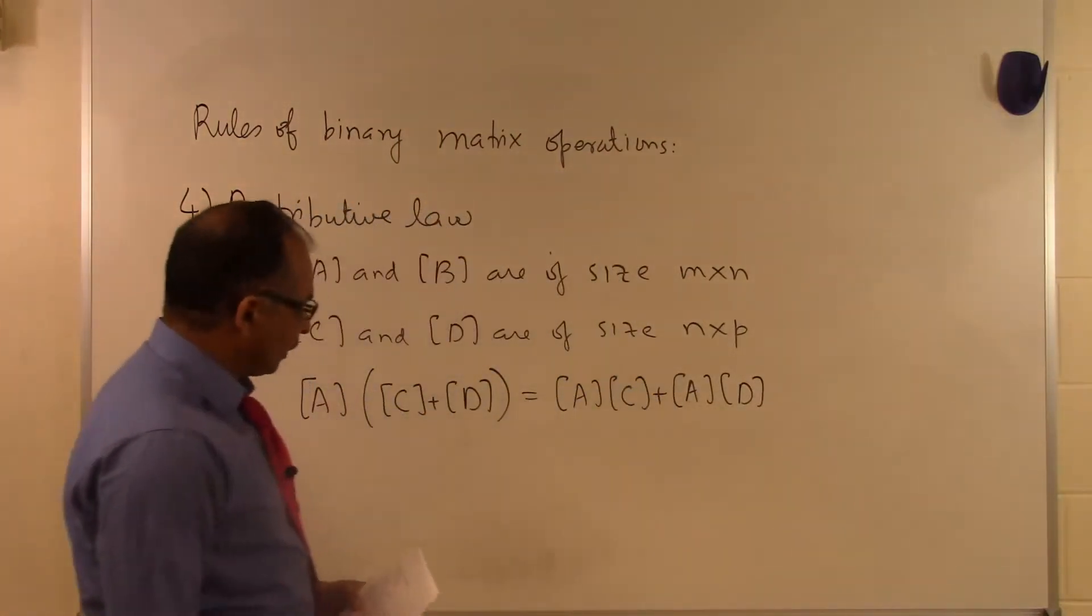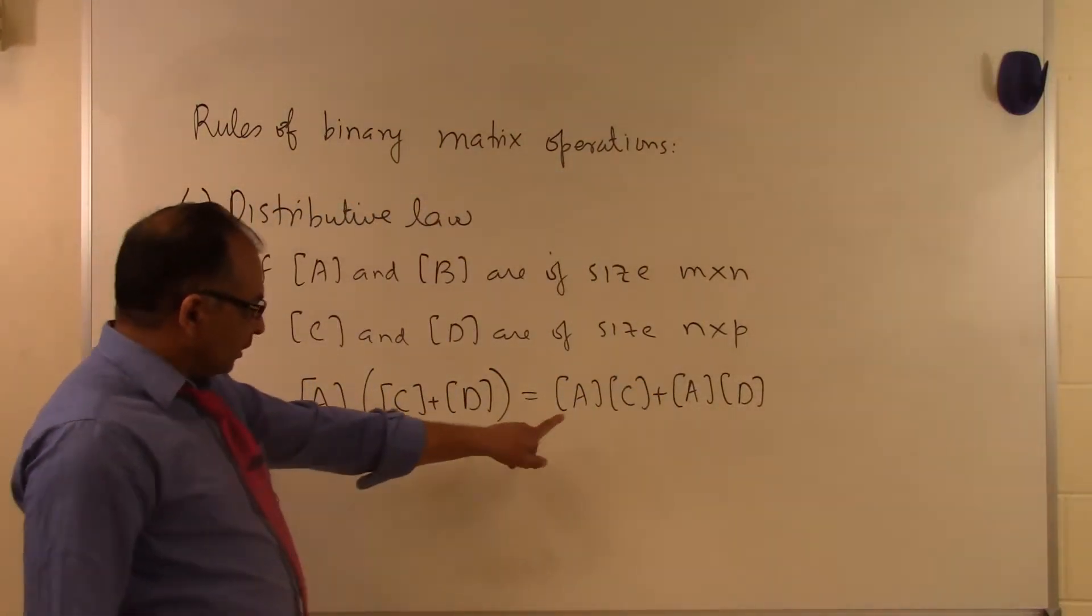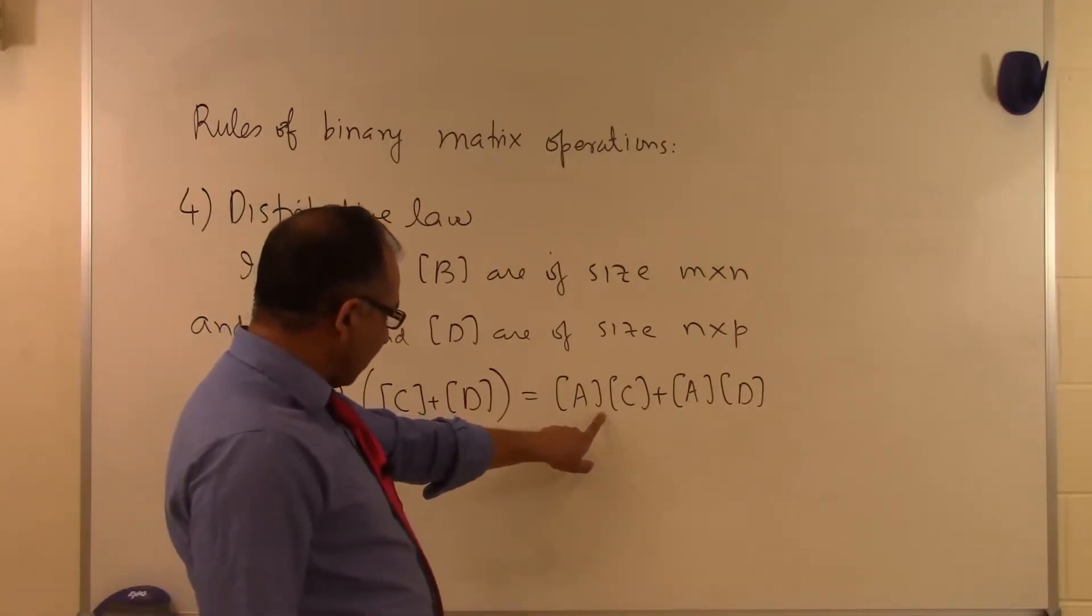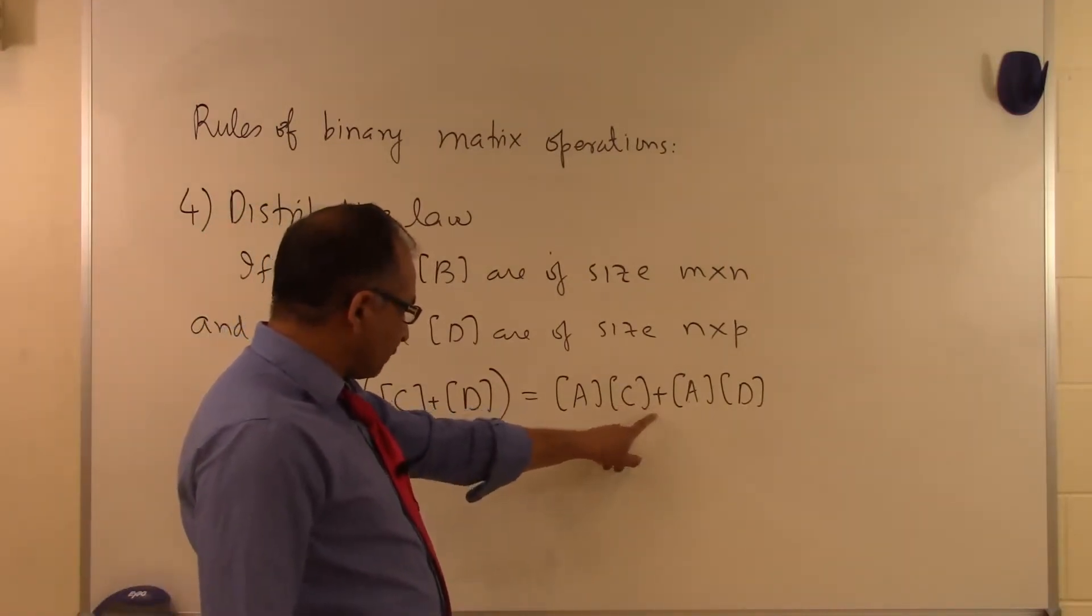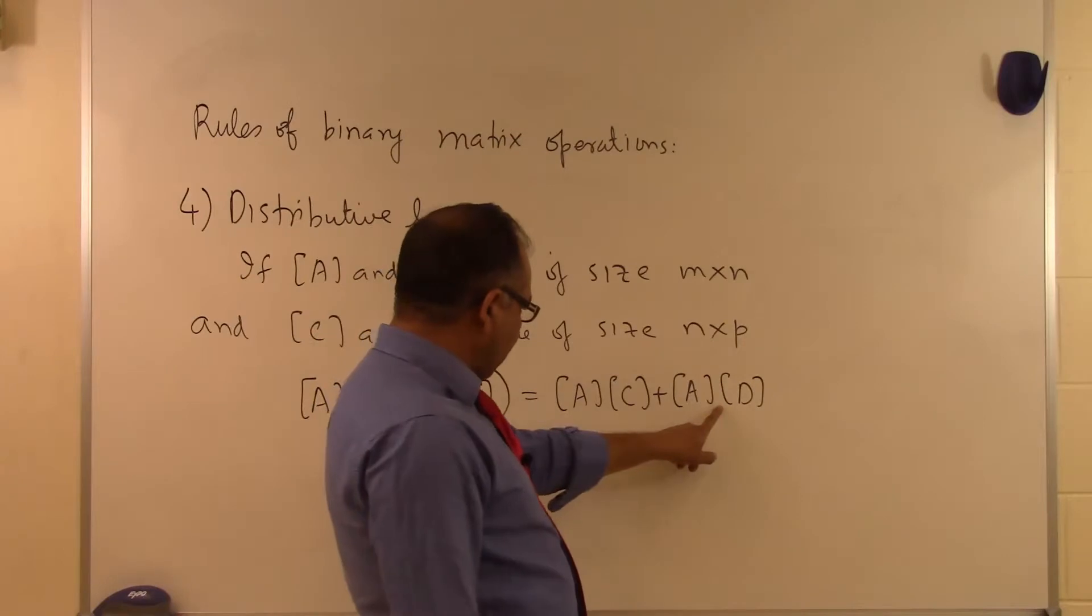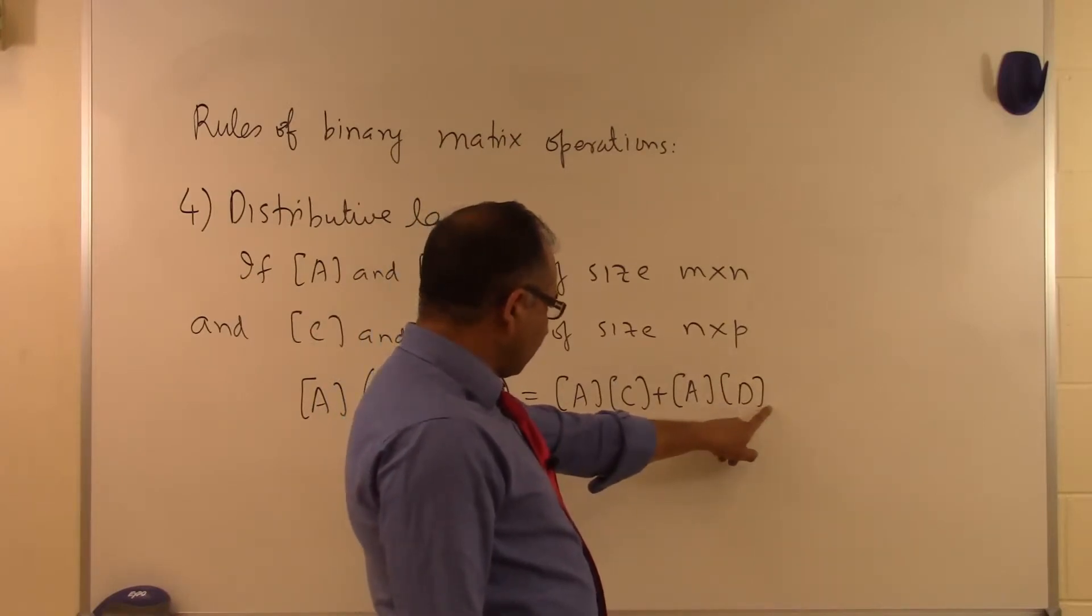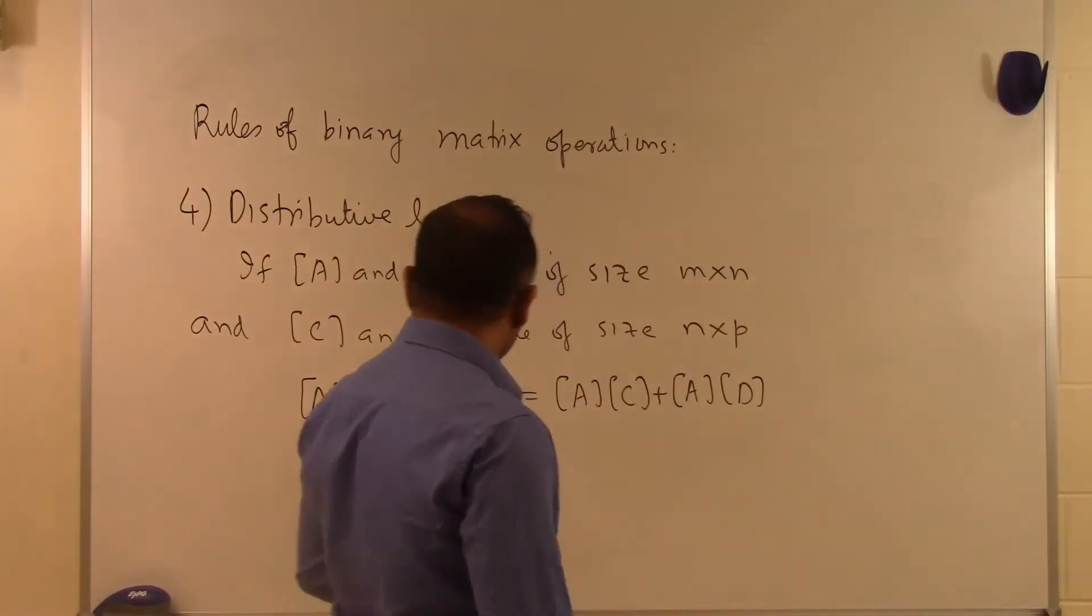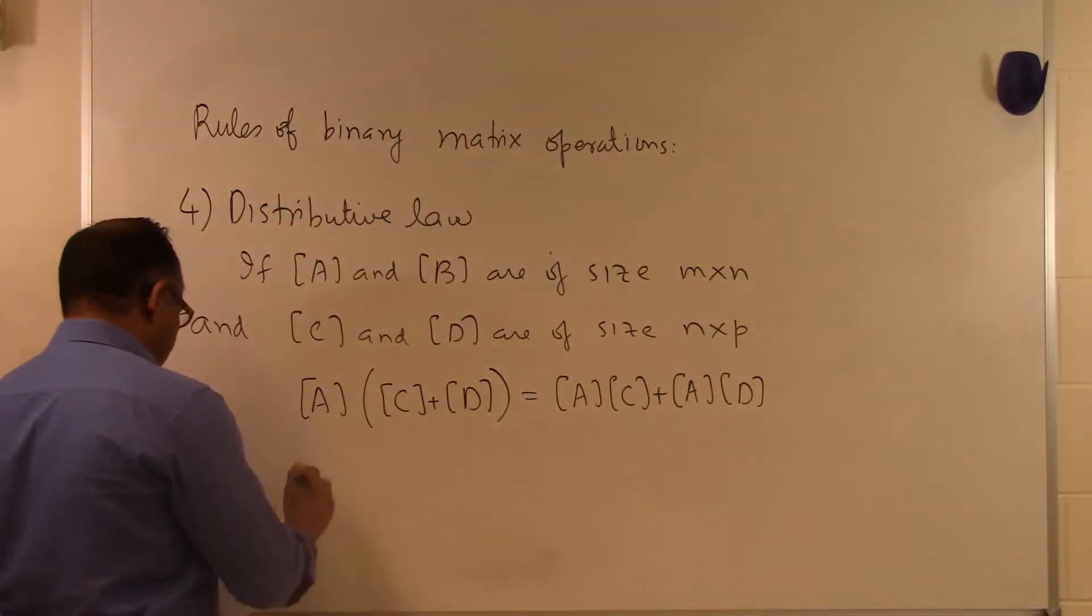Again, we have to understand about the sizes here. The number of columns of A is the same as the number of rows of C. The number of columns of A is the same as the number of rows of D, which is the case right here.